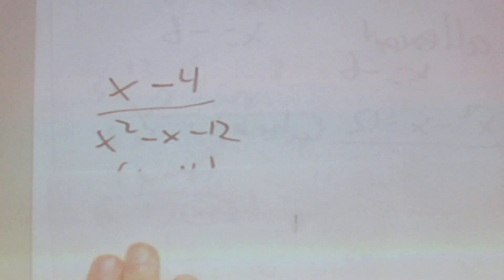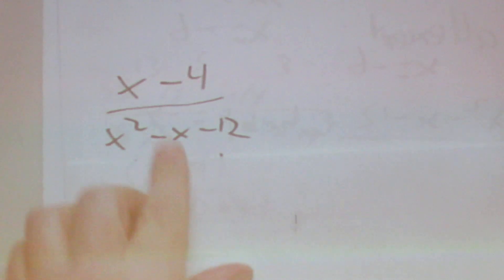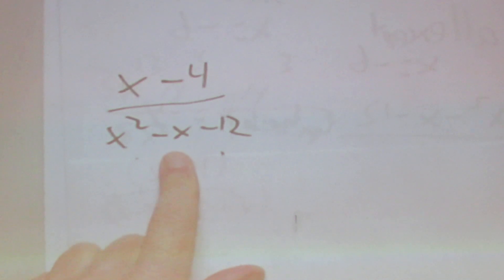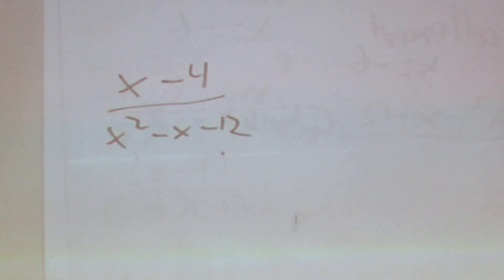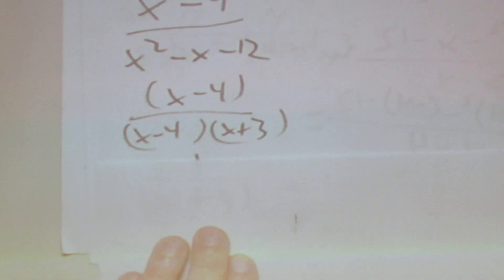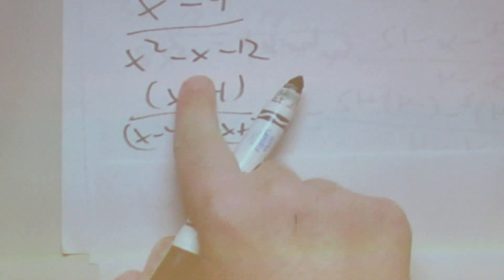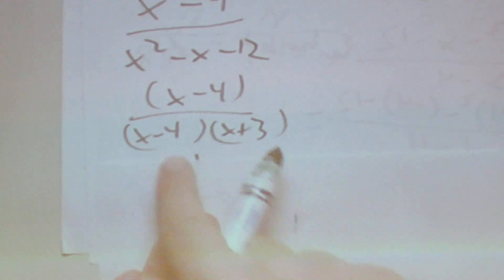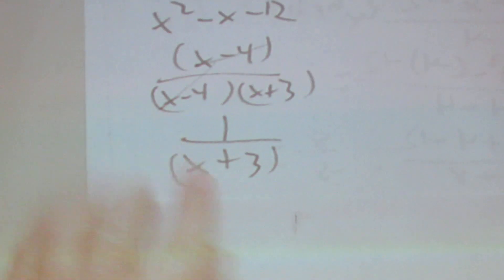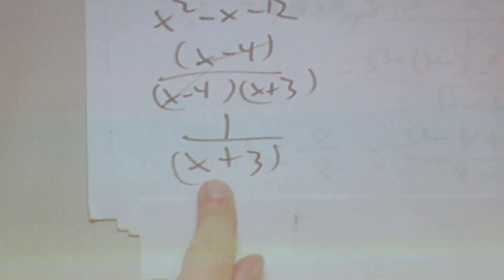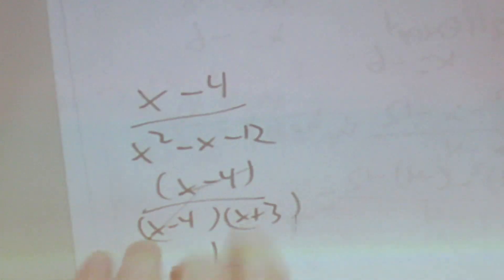The next question is going to be something like x minus 4 over x squared minus x minus 12. We need to factor the bottom. I'll put x minus 4 on top in parentheses so we know we can cancel. x squared minus x minus 12 factors to x minus 4 times x plus 3. We cancel the x minus 4s, so we're left with 1 on top and x plus 3 on the bottom.